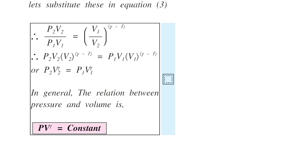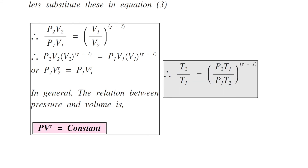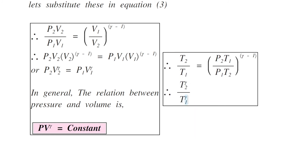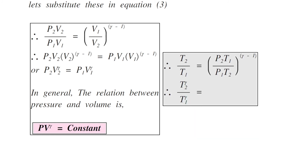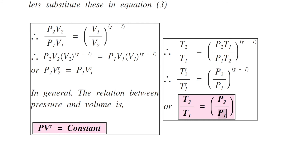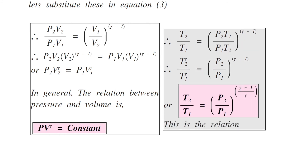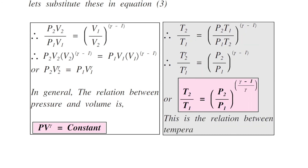Now substituting the second value V1/V2 into equation number three, T2/T1 equals (P2/P1)(T1/T2)^(gamma minus 1). Therefore, T2^gamma divided by T1^gamma equals (P2/P1)^(gamma minus 1), or T2/T1 equals (P2/P1)^((gamma minus 1)/gamma). This is the relation between temperature and pressure in an adiabatic process.